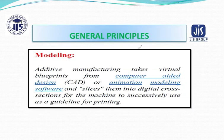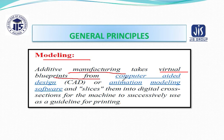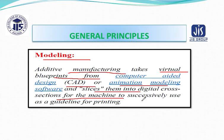What is the general principle of modeling? Additive manufacturing takes virtual blueprints from computer-aided design or animation model software and then slices them into digital cross-sections for the machine to successfully use as a guideline for printing.